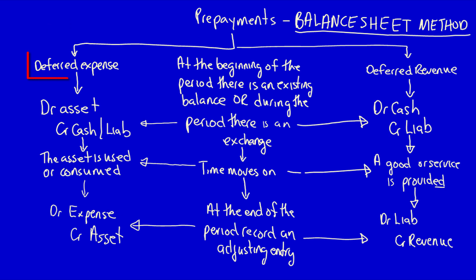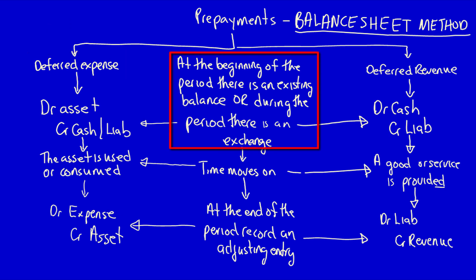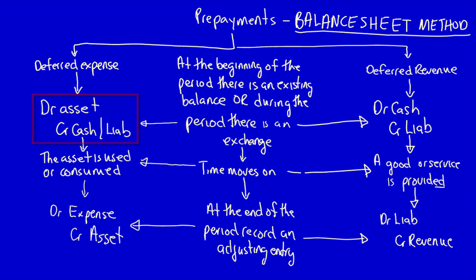Let's discuss deferred expenses first. At the beginning of the period there's either an existing balance on the trial balance with an asset, or during the period there's an exchange. If there is an exchange during the period for the deferred expense, we're going to buy an asset which has future economic benefit and we're going to give up cash or a liability.